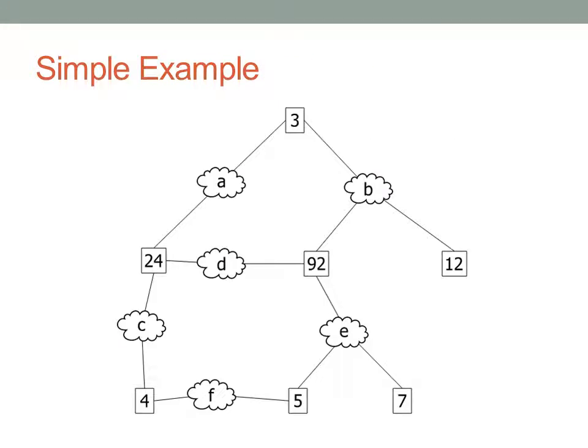Here we have a simple example of a spanning tree topology. Each switch is represented by a rectangle with a number inside — that number is the spanning tree priority value. Each ethernet link between switches is represented by a little cloud. Cloud A might be an ethernet cable connecting switch 3 and switch 24, whereas cloud B might be an ethernet hub connecting three switches on the right. Looking at this topology, the first thing we want to do is select which switch is the root — by quickly glancing at all the values, the root switch is switch number 3.